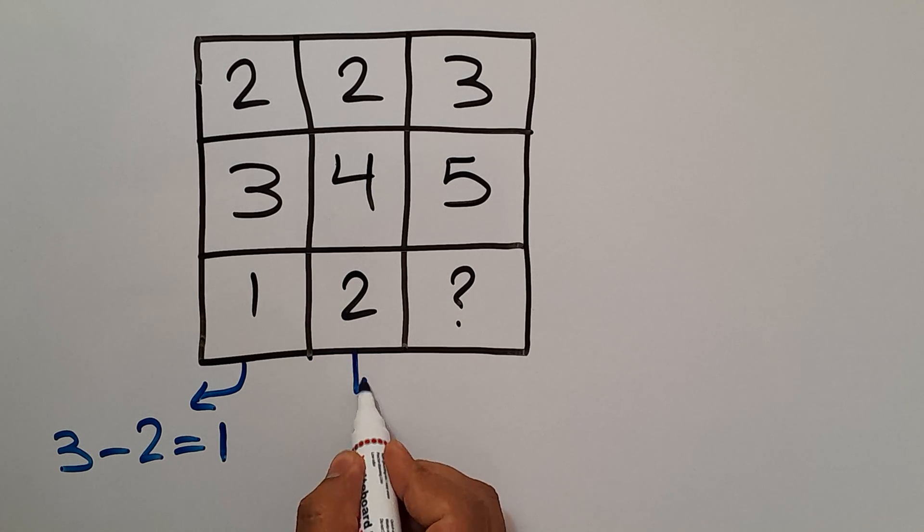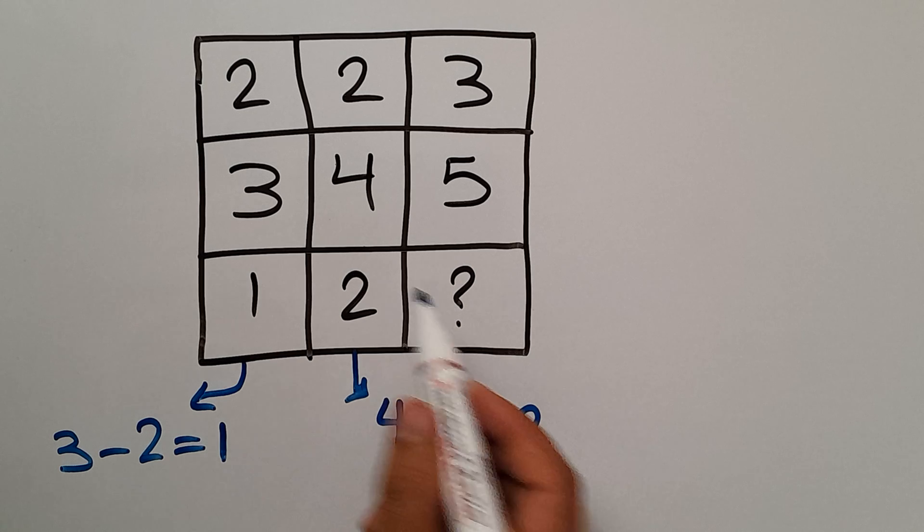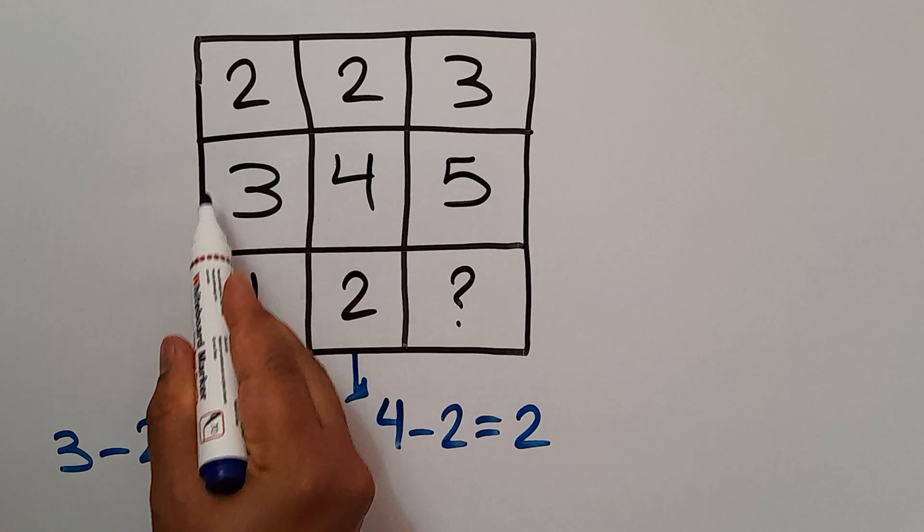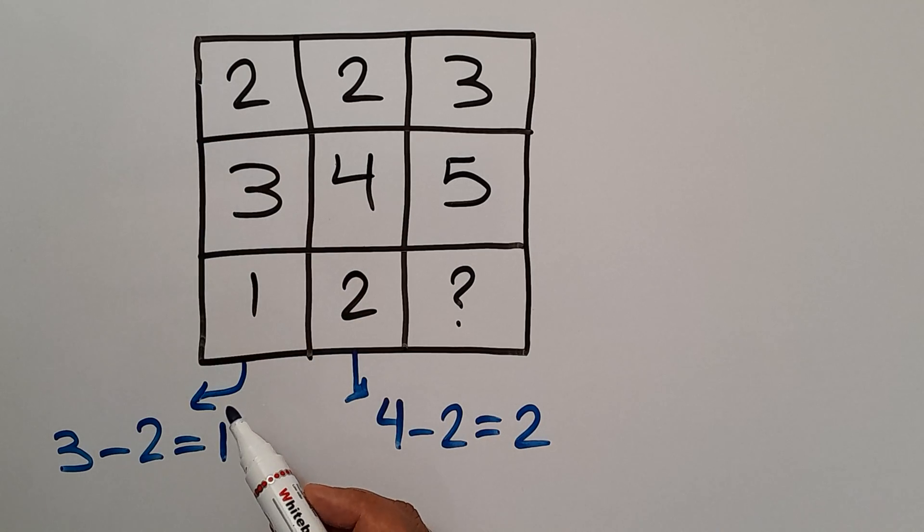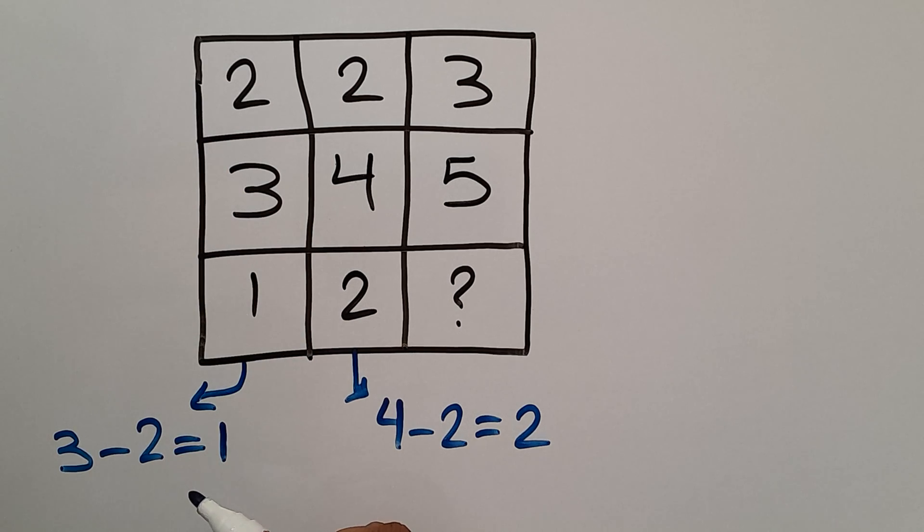4 minus 2 will be equal to 2. So therefore the pattern that exists here is the second number of each column minus the first number will be equal to the third number. Let's use this pattern to find the missing number.